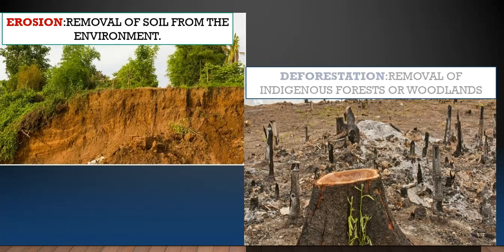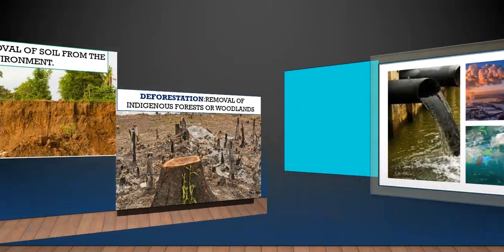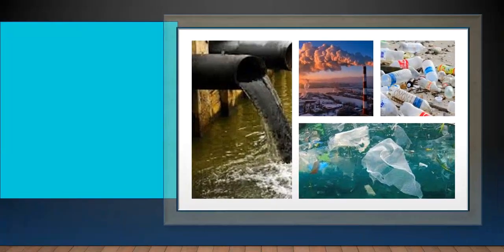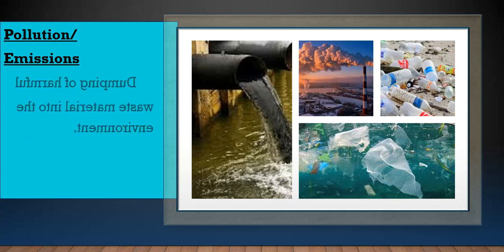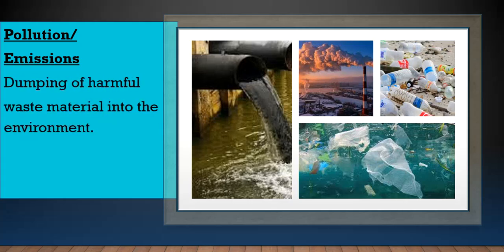Here are some more terms. Erosion is the removal of soil from the environment. Deforestation is the removal of indigenous forest trees — when these trees are removed, that's called deforestation.